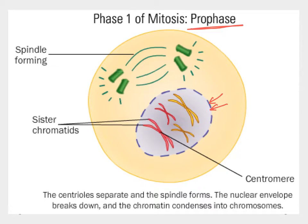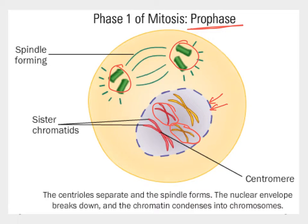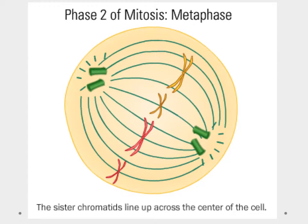During prophase, the chromosomes thicken up and wind tighter — during interphase the DNA is spread out and wispy, but now it bunches together to make it easier to track. The centrioles begin forming spindle fibers between them, and these spindle fibers are what will actually pull the chromosomes to the opposite poles of the cell.